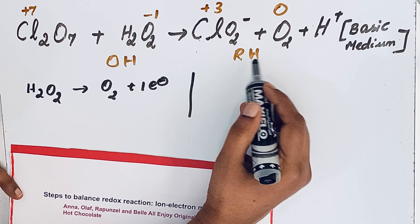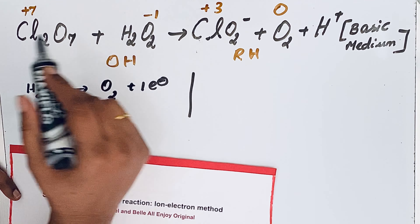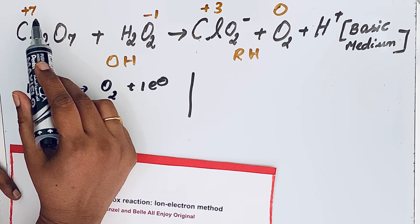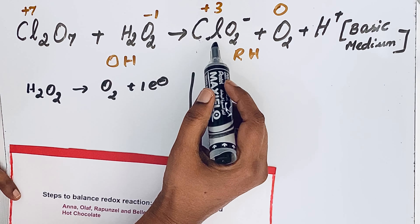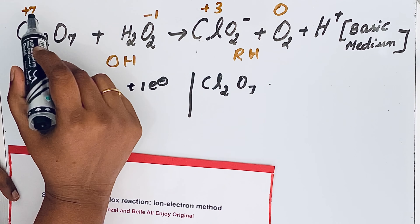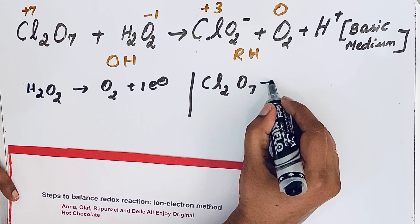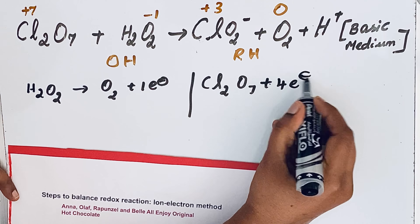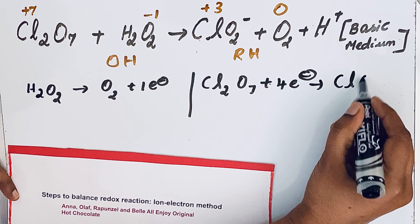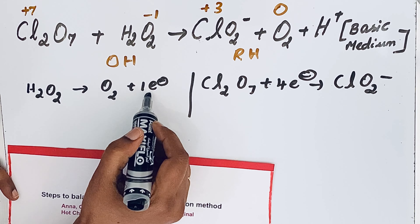Reduction is gaining electrons, meaning the oxidation number decreases. In Cl₂O₇, the oxidation number goes from +7 to +3 in ClO₂⁻. The difference is four numbers, so four electrons are gained per chlorine atom.